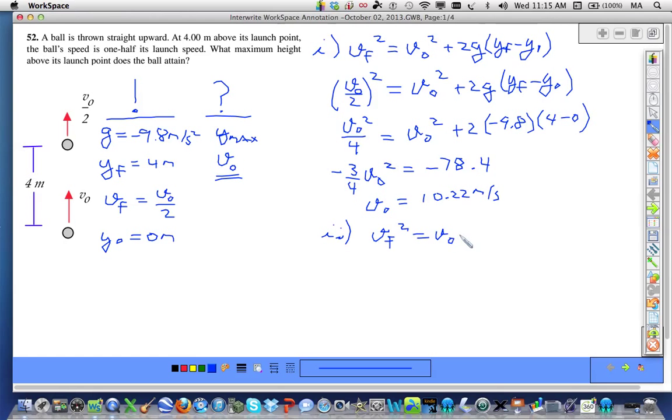So, we have vf squared is equal to v-naught squared plus 2g, and in this case, y-max. Because our delta y, we're going to take y-naught to be 0.